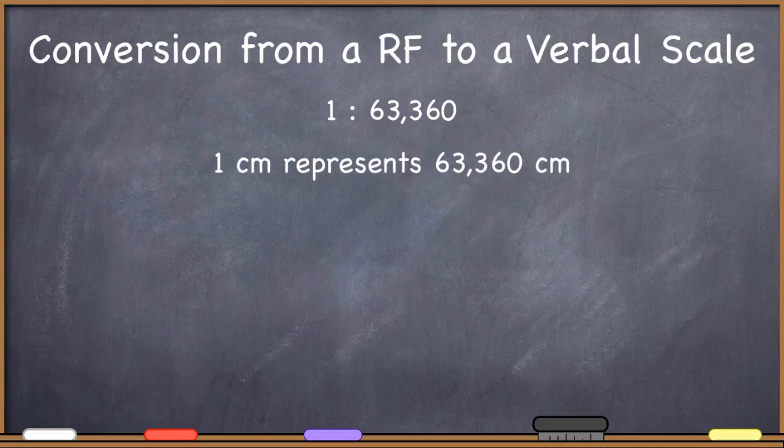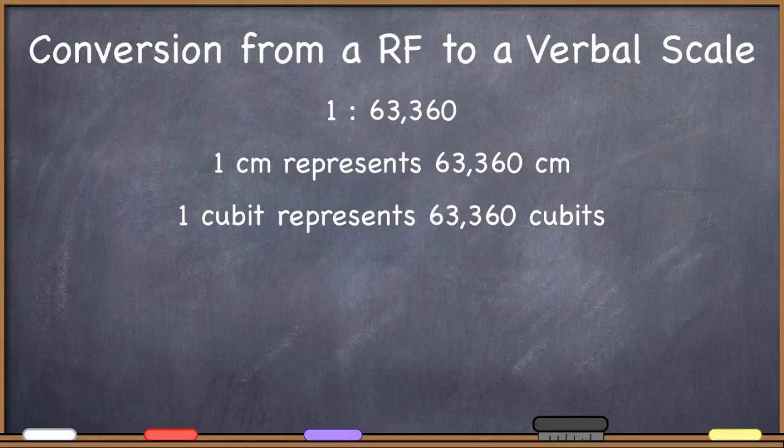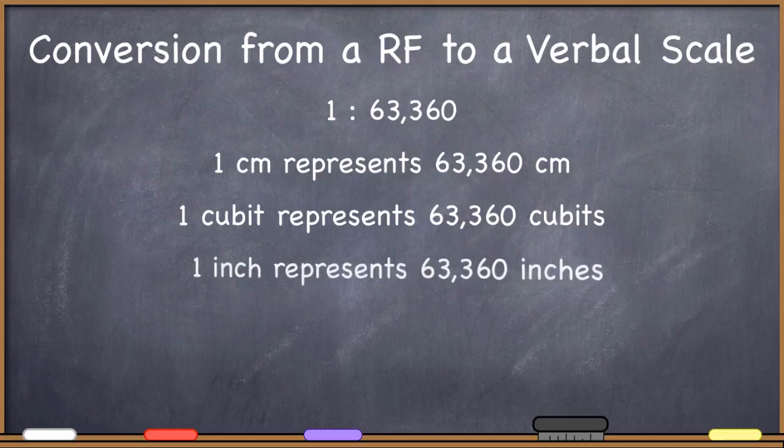Here is a representative fraction, 1 to 63360. So it is true, therefore, that I can add centimeters to both sides and say one centimeter represents 63360 centimeters. I could have added cubits to each side and said one cubit represents 63,360 cubits. One inch represents 63,360 inches.